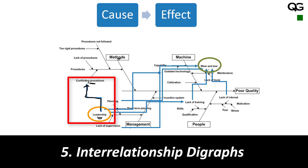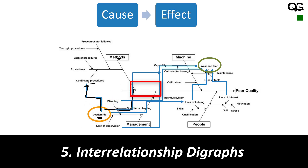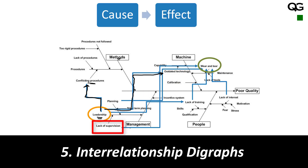So poor leadership causes conflicting procedures, as shown by the arrow here. Another arrow goes from leadership to outdated technology — even though outdated technology was part of the machine branch, poor leadership or lack of leadership causes that as well. Lack of supervision, for example, connects with wear and tear: if you don't have proper supervision, machines will have wear and tear, leading to maintenance problems and poor quality.